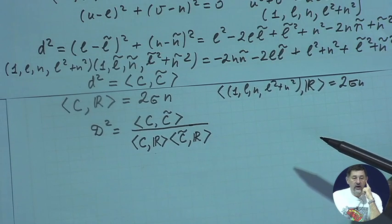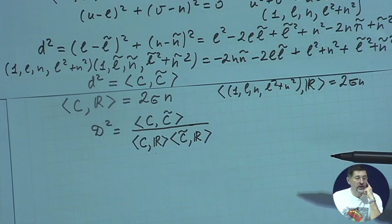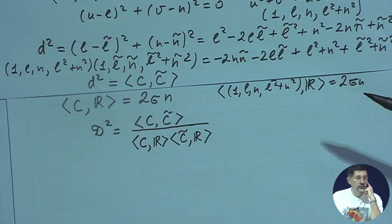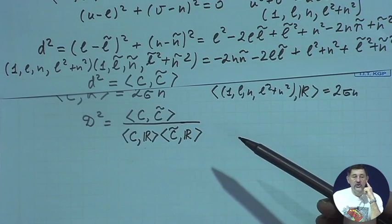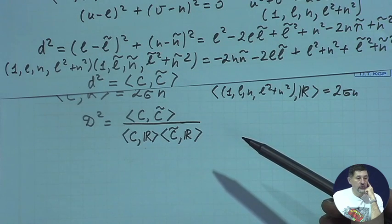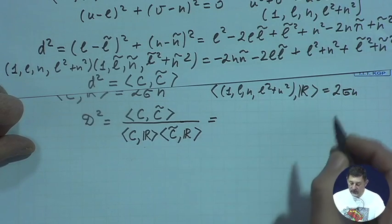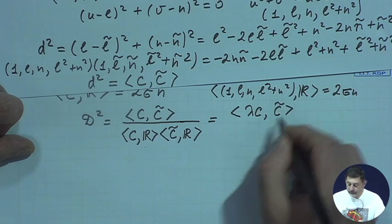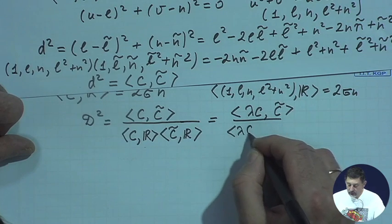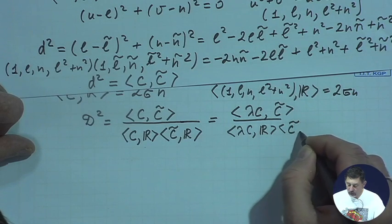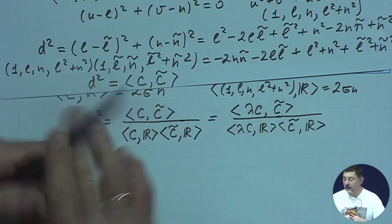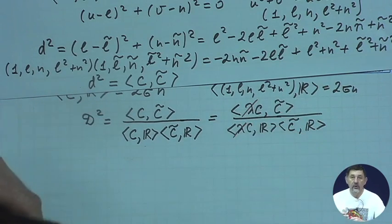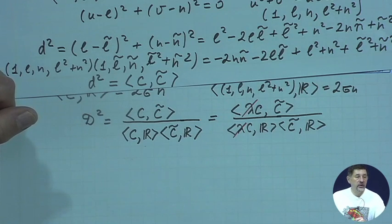Moreover, cycles are defined up to scalar multiples as points in projective space — if I multiply all coefficients of a cycle by the same λ, it represents the same cycle. So when we build an expression, we need it to be homogeneous of zero order with respect to all coefficients. Indeed, if we multiply by λ the coefficients of cycle C everywhere in this expression, we get an expression of zero order with respect to λ, because that λ cancels out. So that definition is also correct in this sense.